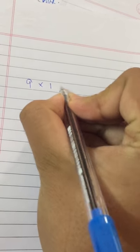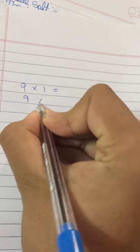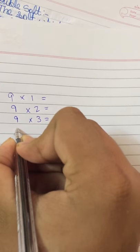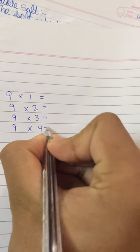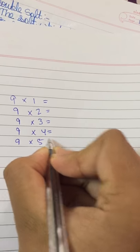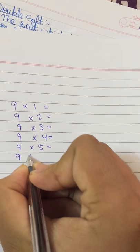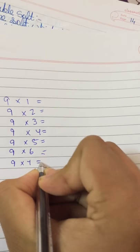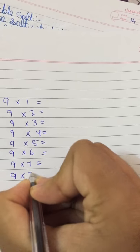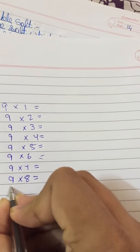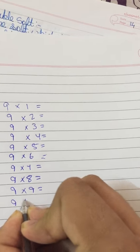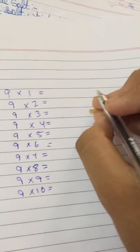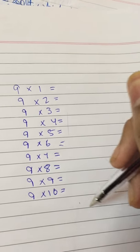So first we will write 9×1, 9×2, 9×3. I will give you a very easy hint how to do this. 9×5, 9×6, 9×7, 9×8, and 9×9, and 9×10. Once you have done this, what you are going to do is start from here.